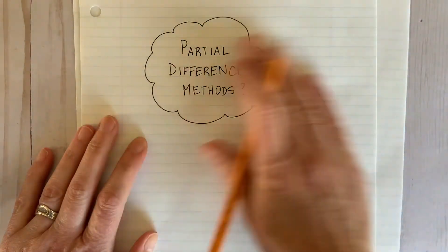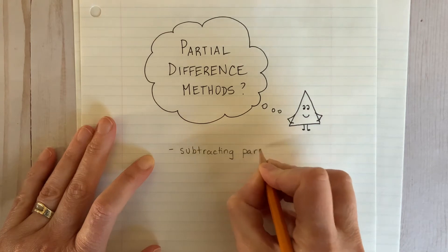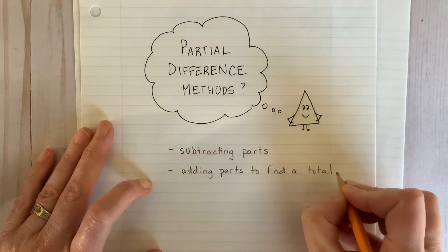First up, let's look at partial difference methods. When you use these methods, you are subtracting in parts, and then you add those parts together to find a total.